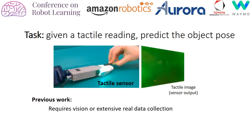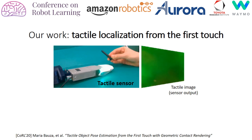Instead, in this work, we aim at solving tactile localization from the first touch. This means that we do not require any previous contact with the object or an external perception system. Instead, we assume that we know the object's model beforehand. Note that this is a category that fits many industrial settings.